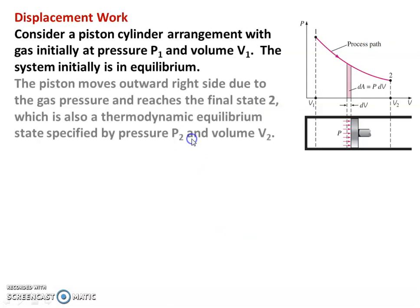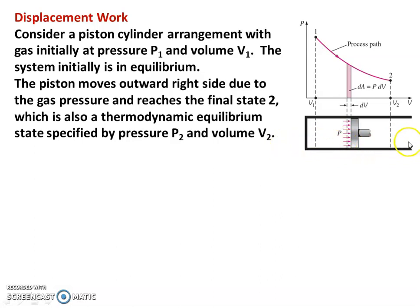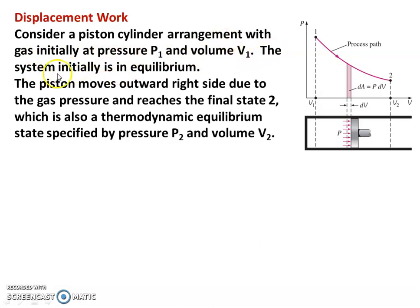Displacement work: consider a piston-cylinder arrangement. The piston reciprocates inside the cylinder, moving from one side to the other. This movement is represented on a PV diagram — pressure on the y-axis and volume on the x-axis. The piston is initially at state 1 with pressure P1 and volume V1. The system is initially in thermodynamic equilibrium, with stable properties. Pressure is P1 and volume is V1.